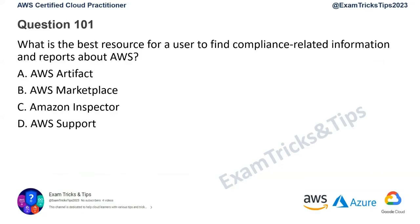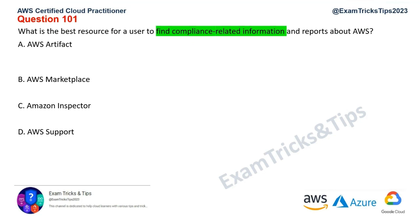Question number 101: What is the best resource for a user to find compliance-related information and reports about AWS? I'm assuming that you have done episodes 1 to 17 and 100 questions before this. Some questions will repeat in terms of concept, so wherever that's obvious, instead of using the elimination technique, I will go straight to the answers.